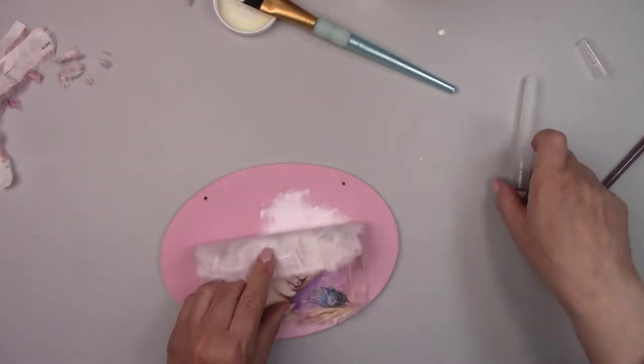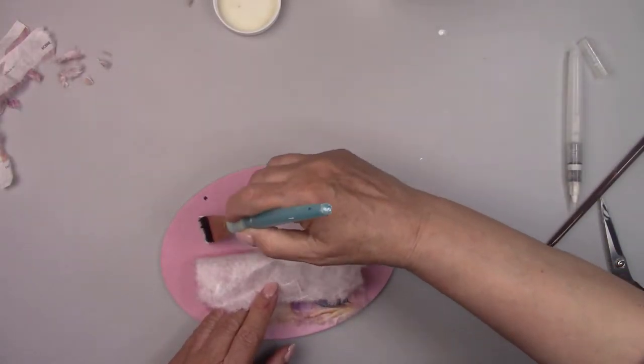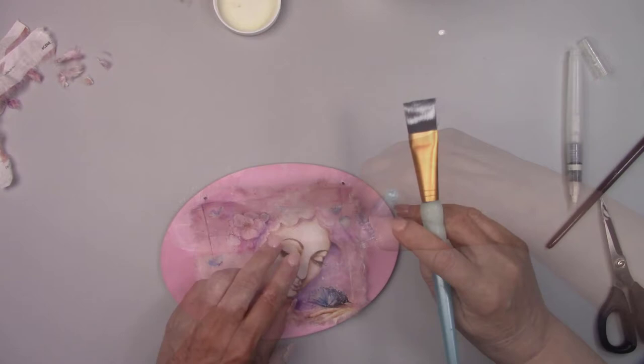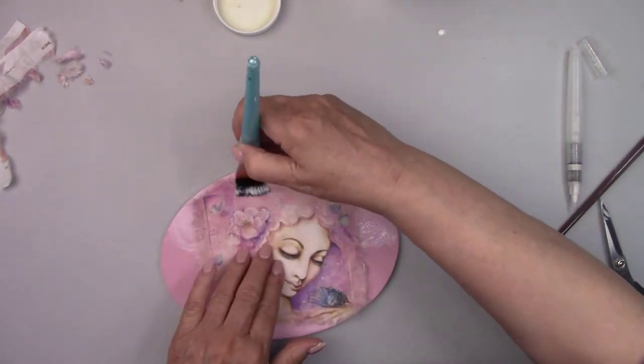Once I have the picture positioned the way I want it, I'm folding back the top half and adding the Mod Podge. Then I'll lift up the bottom part of the picture and add the Mod Podge there as well.